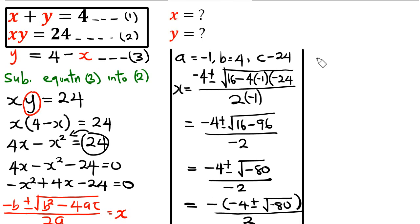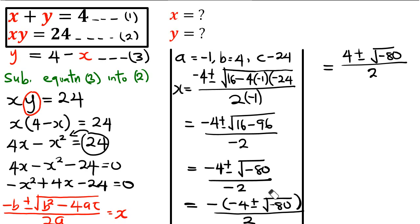Distributing that negative sign: minus times minus 4 gives positive 4, and the plus or minus sign remains. So we now have 4 plus or minus the square root of minus 80, all over 2. We can now split what we have under the square root.